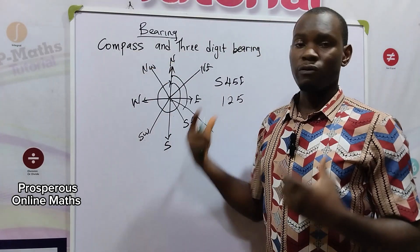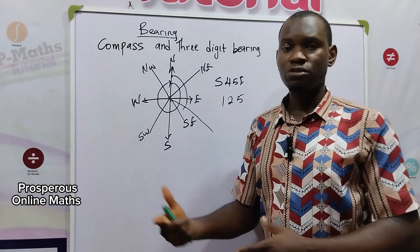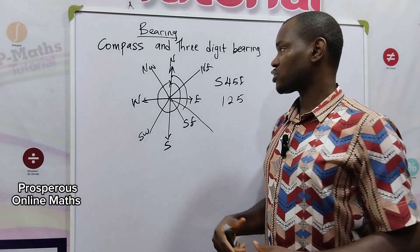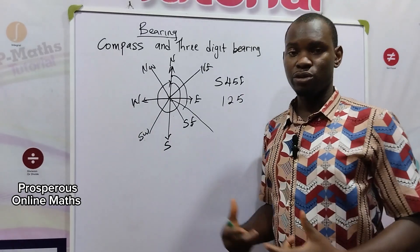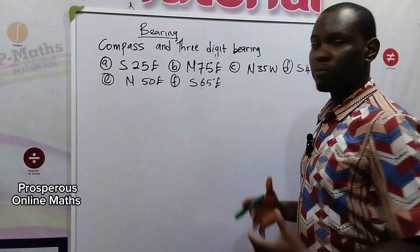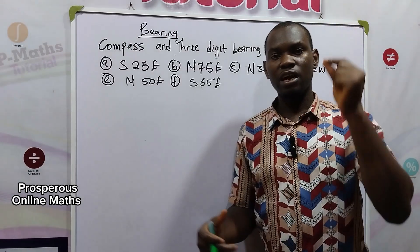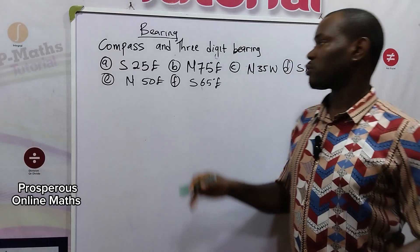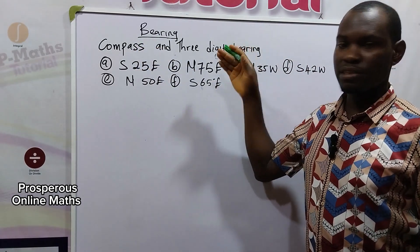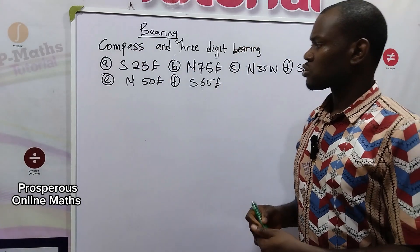Now, these angles can be converted from one to the other. Let's consider how the conversions can be done. These are examples of compass bearing — let's see how we convert from compass to three digit bearing.